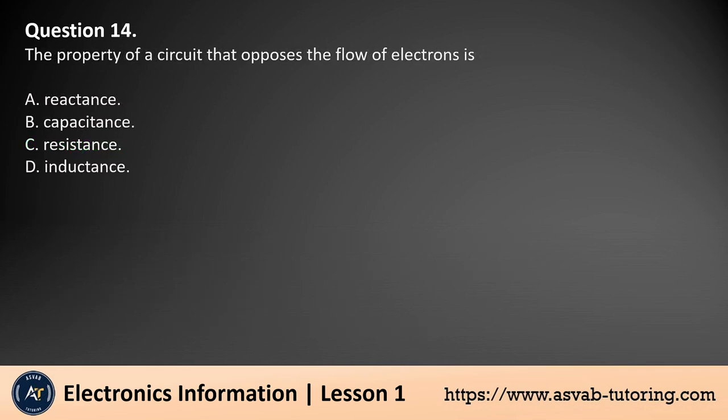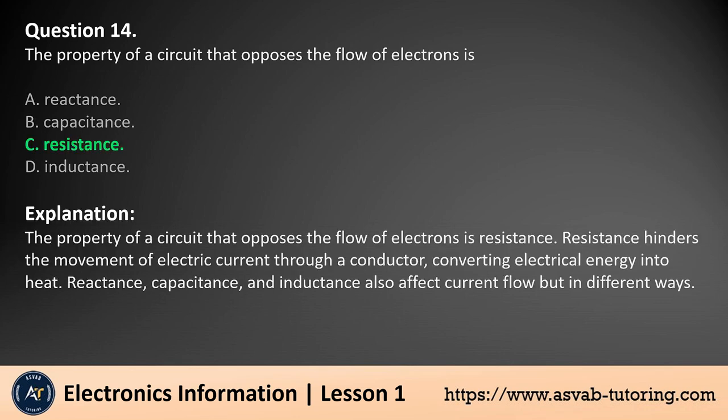Question 14. The property of a circuit that opposes the flow of electrons is resistance. The answer is c. Resistance hinders the movement of electric current through a conductor, converting electrical energy into heat. Reactance, capacitance, and inductance also affect current flow but in different ways.